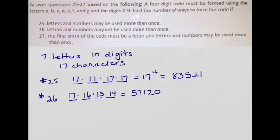Now the other way to figure this out would be to say we're choosing from 17 items and the order is important so we're using permutations and we're choosing four items and that will also give you 57,120.